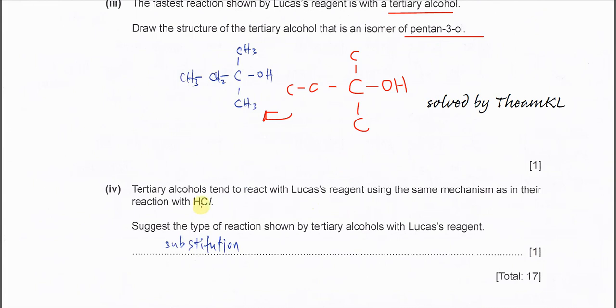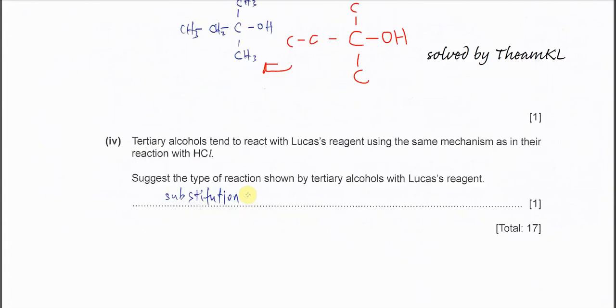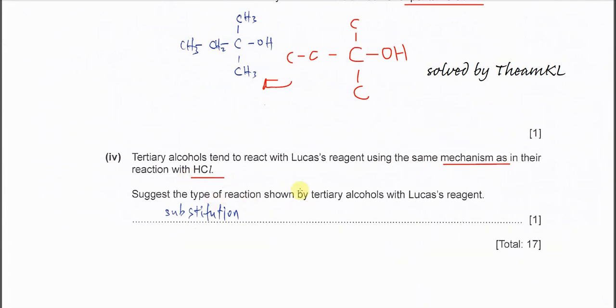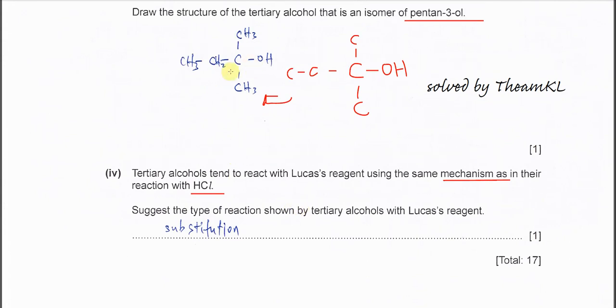Part 4. Tertiary alcohol tends to react with Lucas reagent using the same mechanism as in their reaction with HCl. Suggest the type of reaction shown by the tertiary alcohol with this Lucas reagent. Let's say now this tertiary alcohol reacts with the reagent. This OH will be substituted by chlorine. So we know that the type of reaction must be substitution. That's all for this question. Thank you.